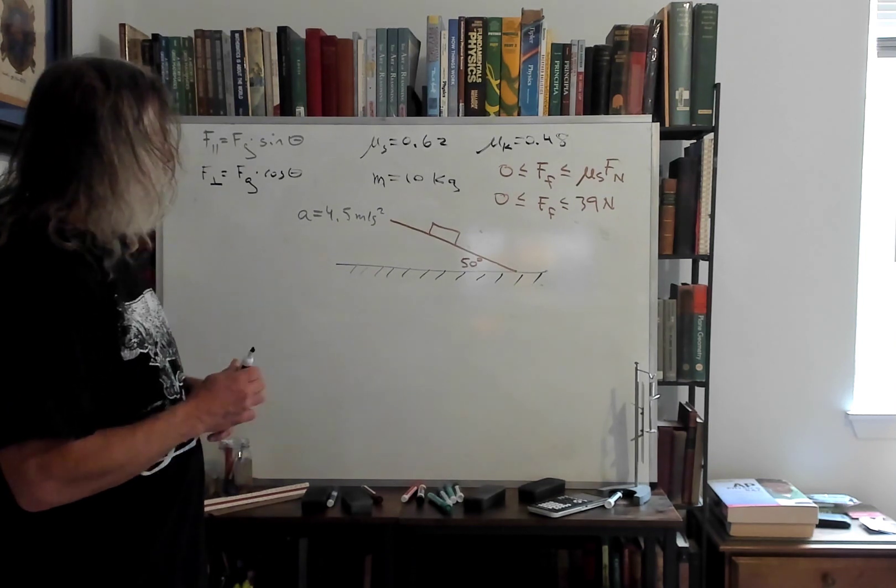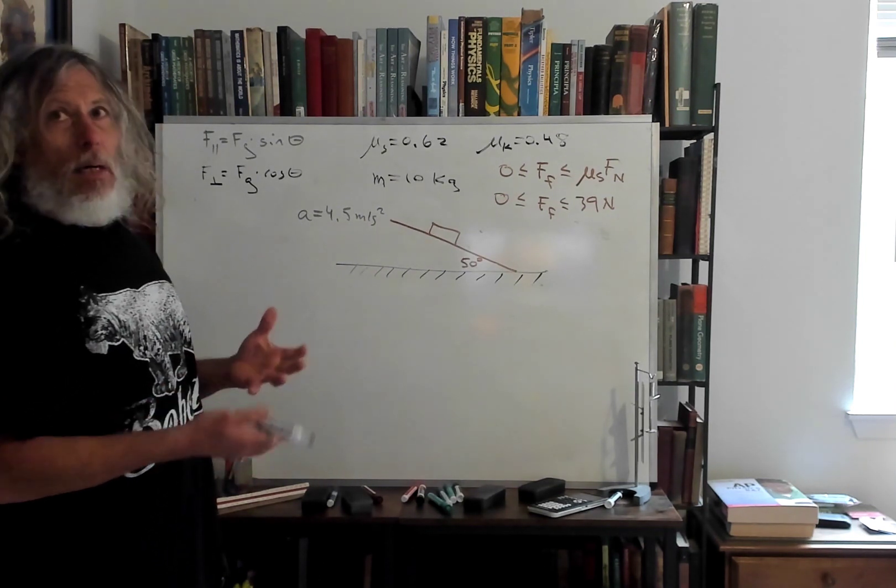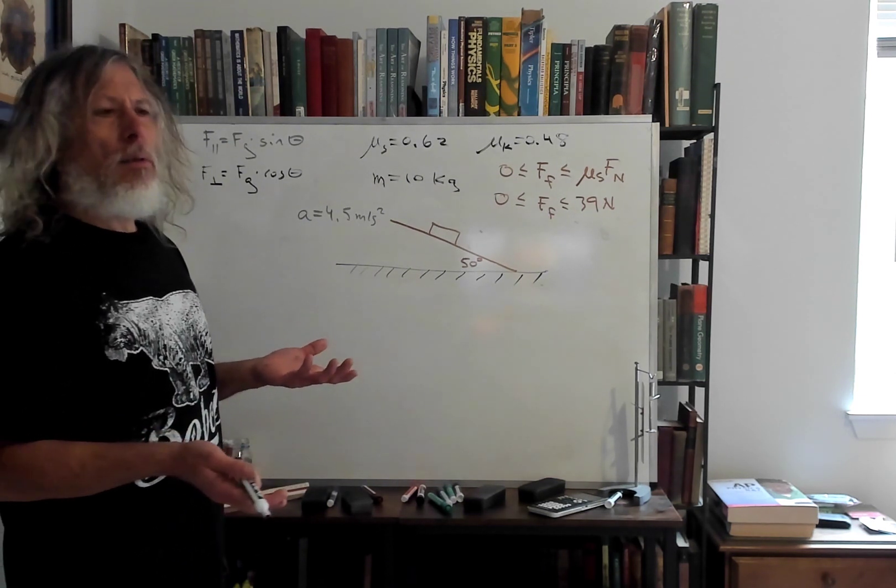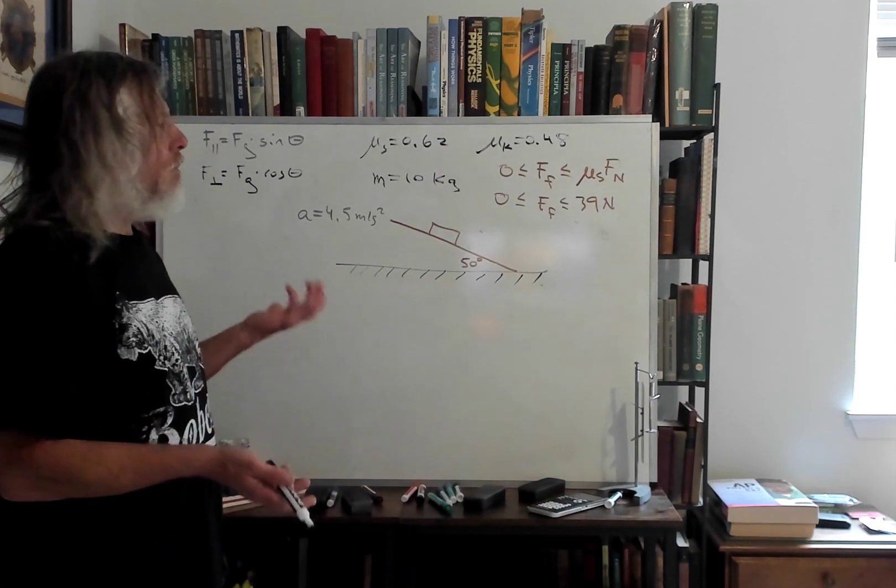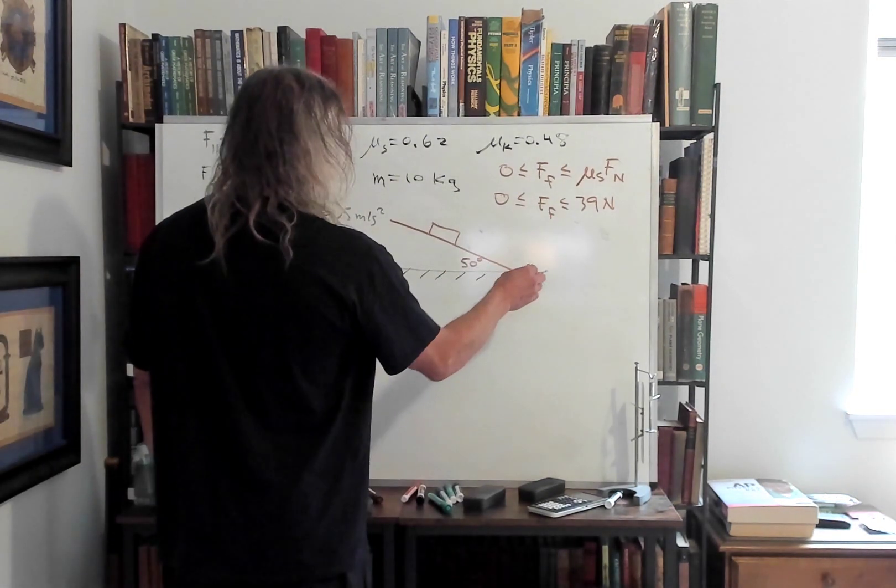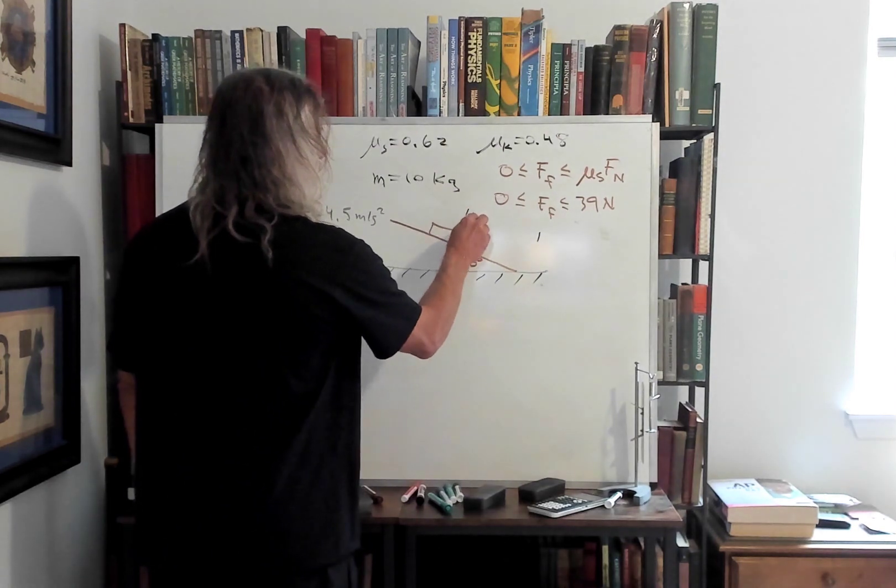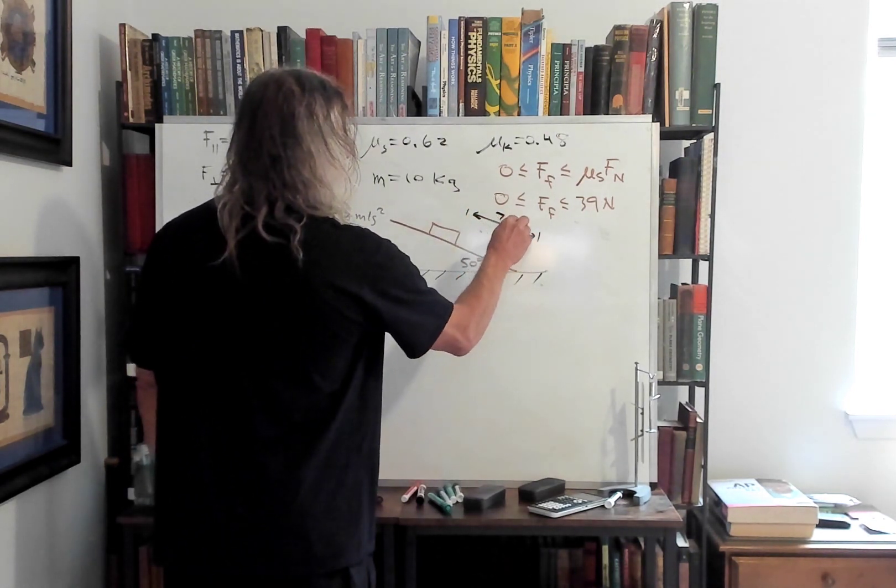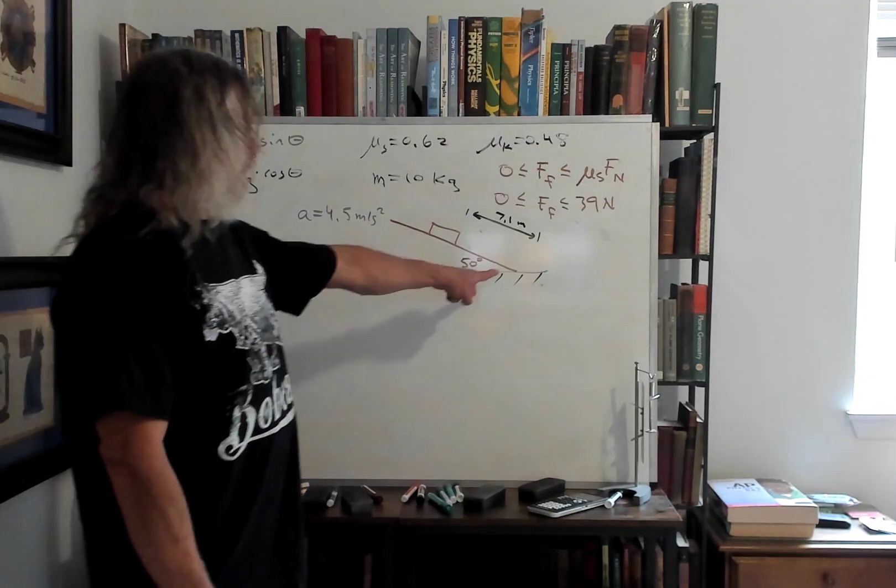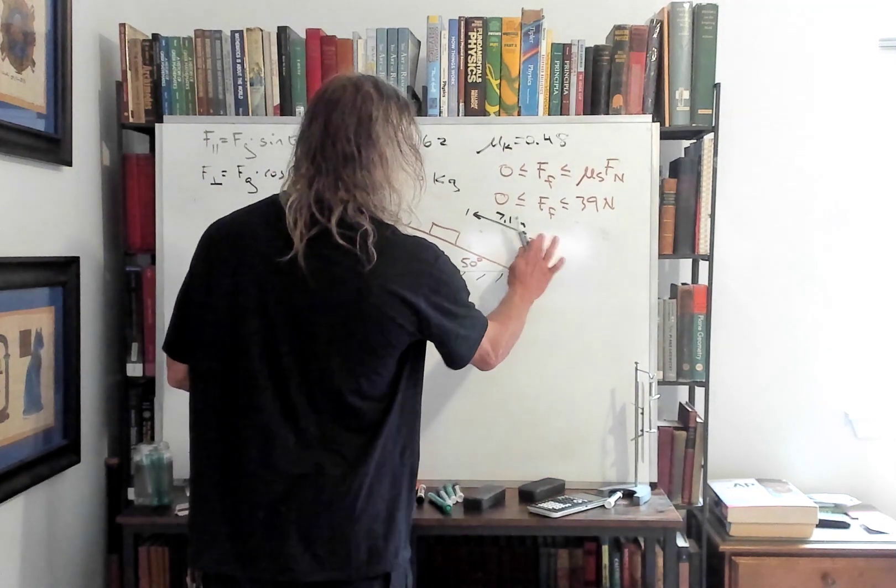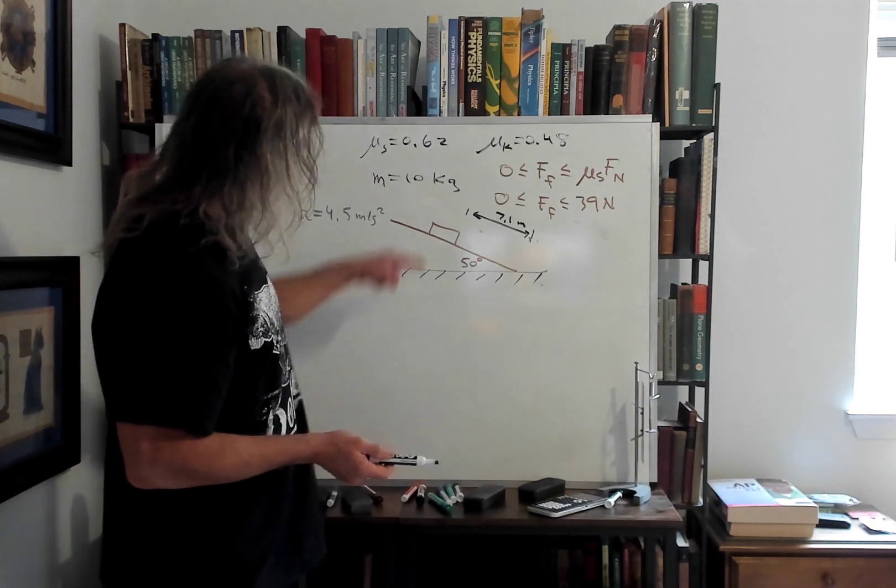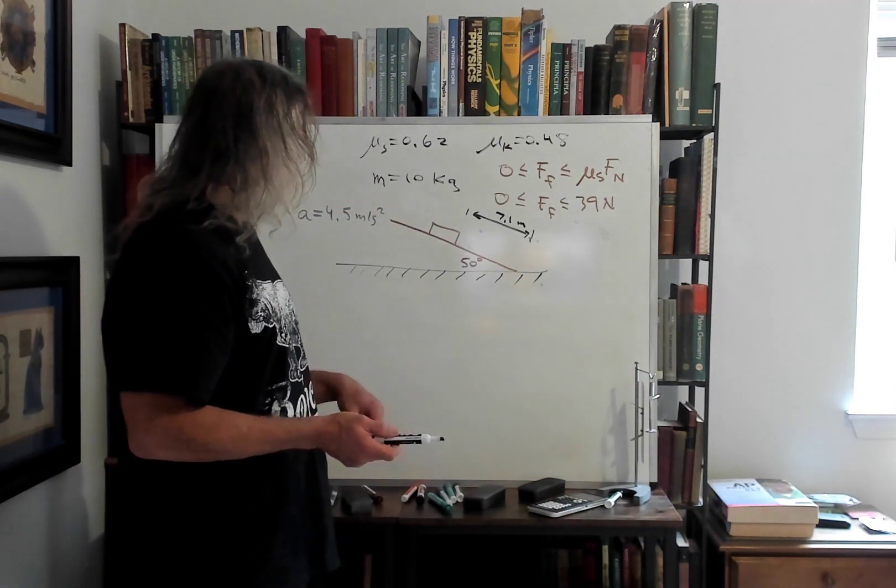Then, let's say that the object starts out at 7.1 meters up the board. Let's say from the bottom to here, 7.1 meters to this point here. To where it comes down from here to the ground, 7.1 meters.